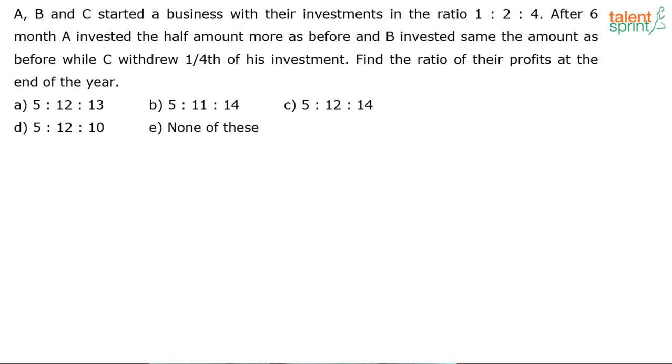So basically, in a span of one year, he's talking about two different points. Initially, they invested in the ratio of 1:2:4. So let's say 1x, 2x and 4x - 100 rupees, 200 rupees and 400 rupees, for example. This is zeroth month. This is the 12th month. So what is the ratio of profits at the end of the year is the question, if they started with this kind of investment.